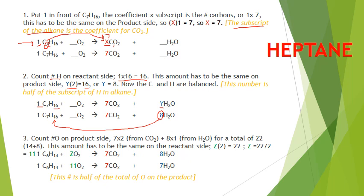The final part is get the oxygens. Count the oxygens on the product side and they come from two places. 7 times 2 is 14, 8 times 1 is 8. Add them together and you get 22. So there has to be 22 oxygens on the reactant side. Well, there's a 2 here, so what number times 2 is 22? It's 11. Notice that this number here is half of the number of oxygens on this side. If you take this total, divide it by 2, that's how you balance these.